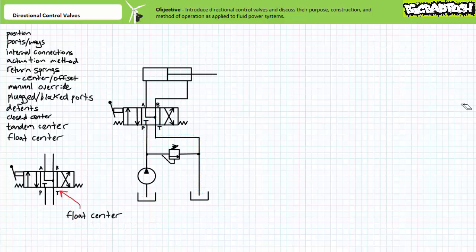Another common center position variation is known as float center. Quite like a closed center, a float center still blocks the pump outflow and the pressure relief valve is forced to dump flow to tank. However, the actuator ports A and B are also connected to low-pressure tank. This low-pressure connection allows the actuator to not maintain position but rather float freely — hence the name — allowing an outside force or operator to manually reposition the actuator.